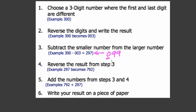Then you want to reverse the step. So if you had 99, you now have 990. For me I had 297, so now I have 792. And then I want to add the numbers from steps three and four. That's these two numbers here. And write your results on a piece of paper.